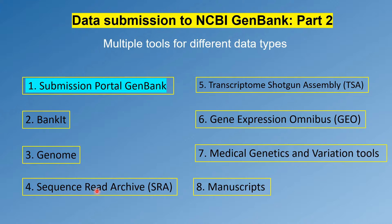The fifth tool is Transcriptome Shotgun Assembly or TSA — first you need to submit the quality-checked reads using the SRA tool, and then you will be able to submit transcribed RNA sequences using the TSA tool. The sixth is the Gene Expression Omnibus tool, where you can submit gene expression and epigenomics data.